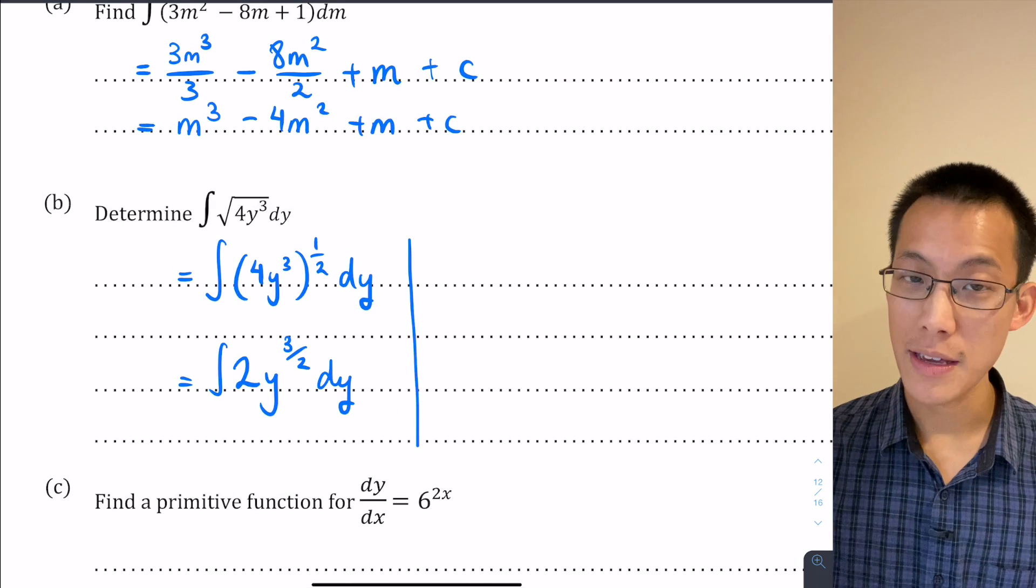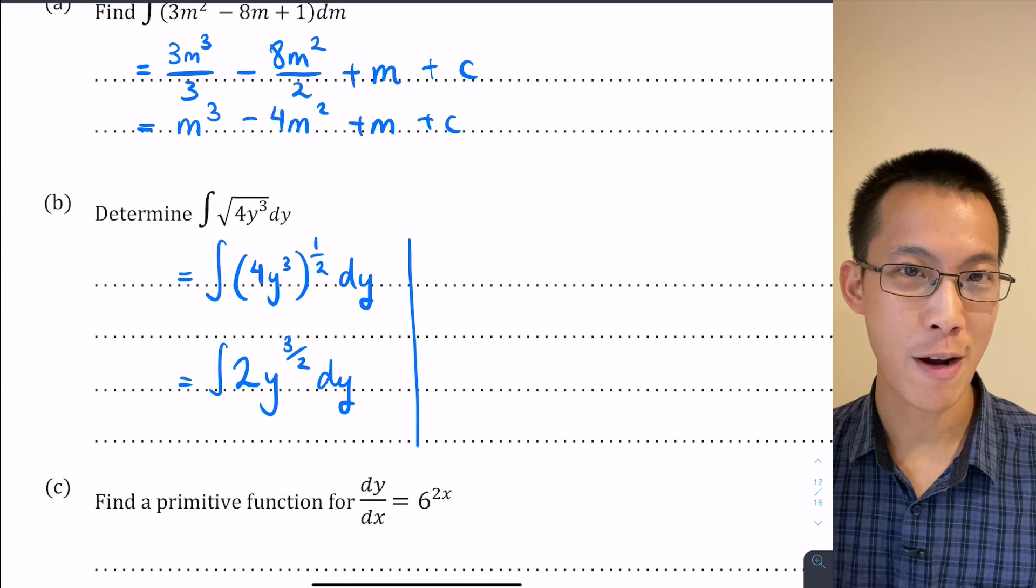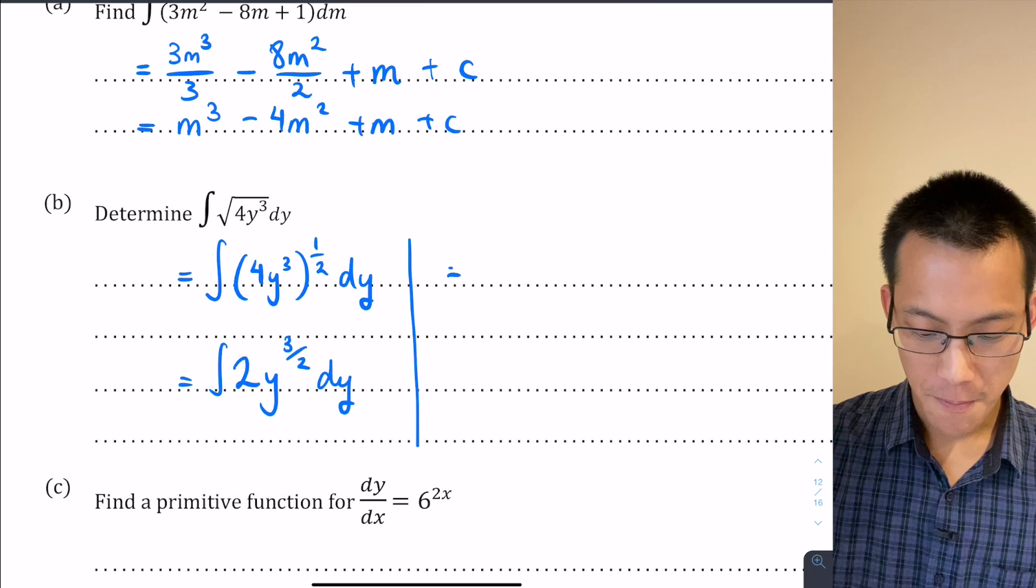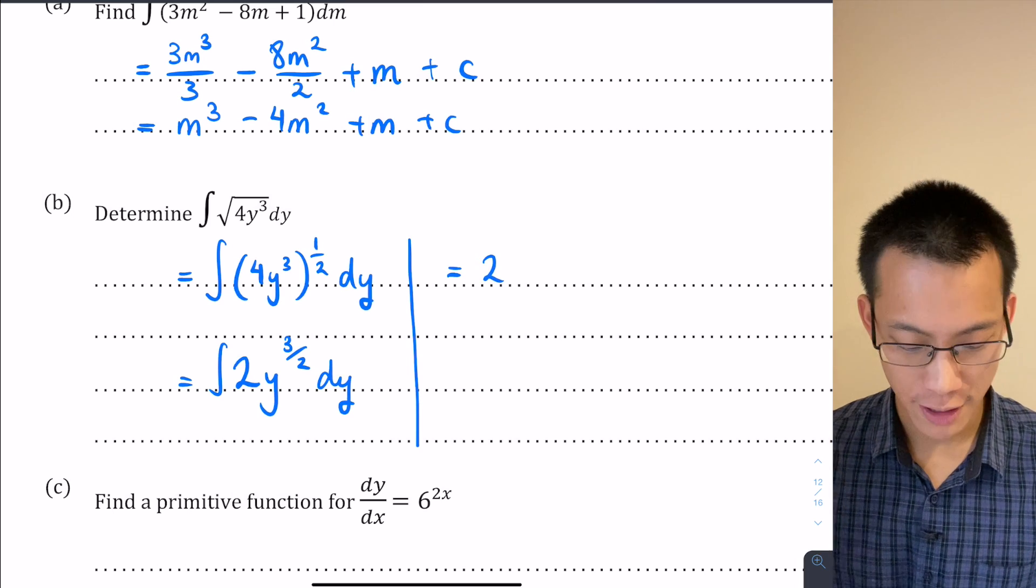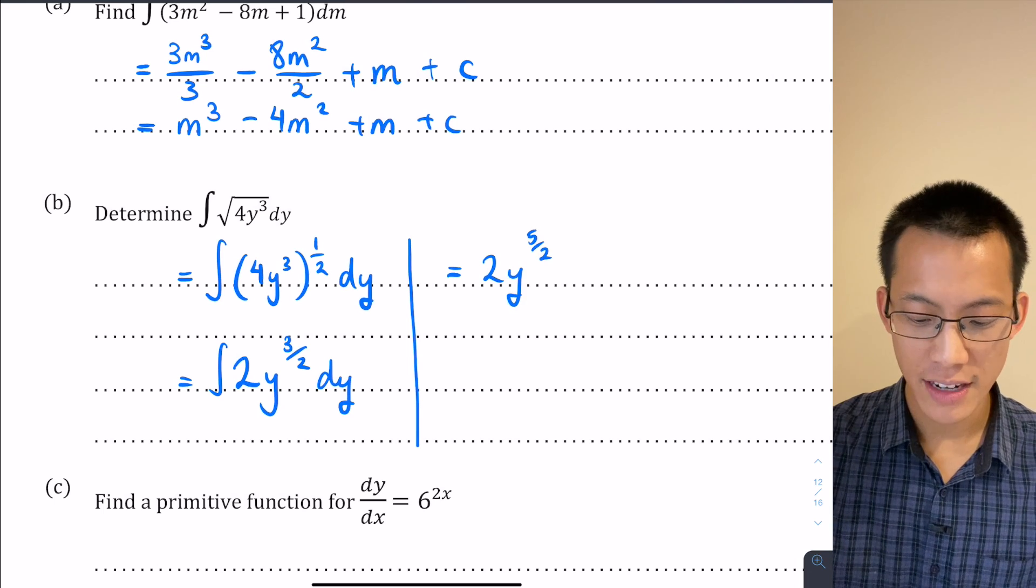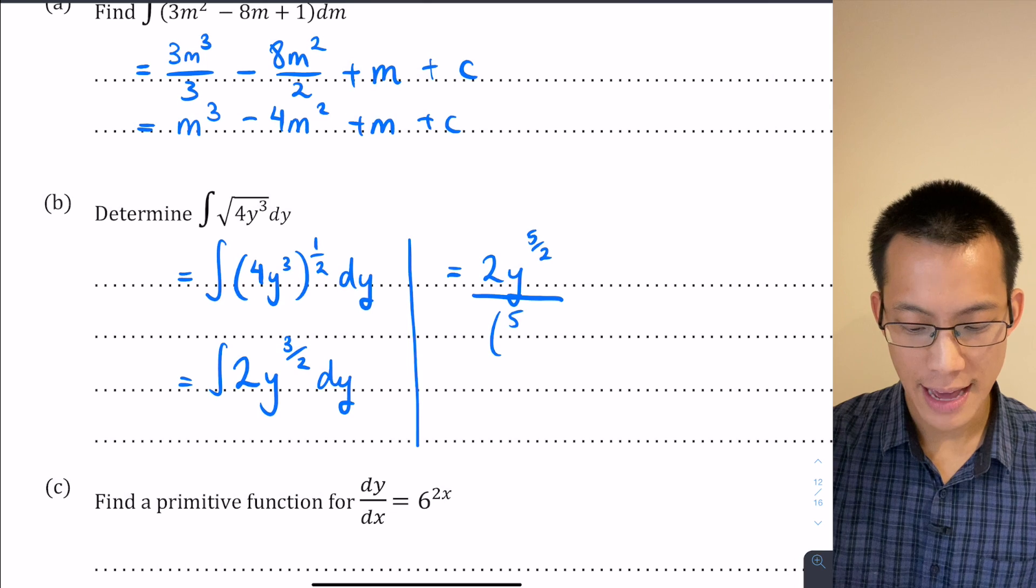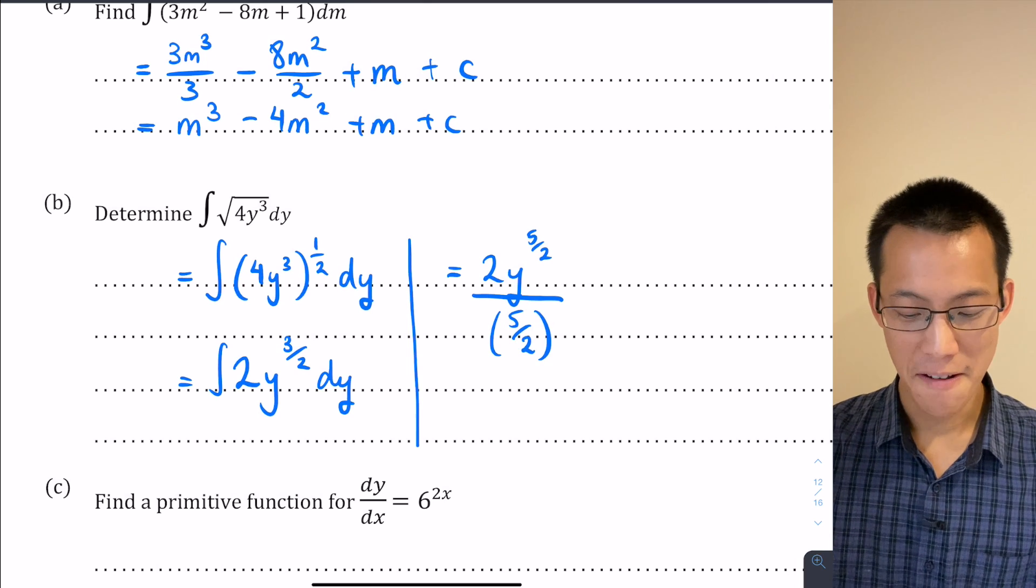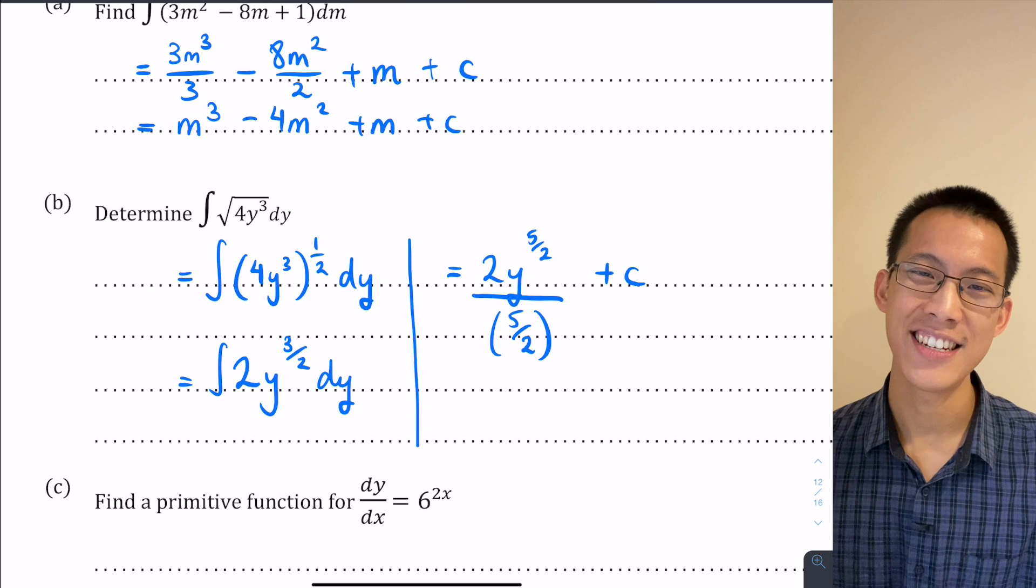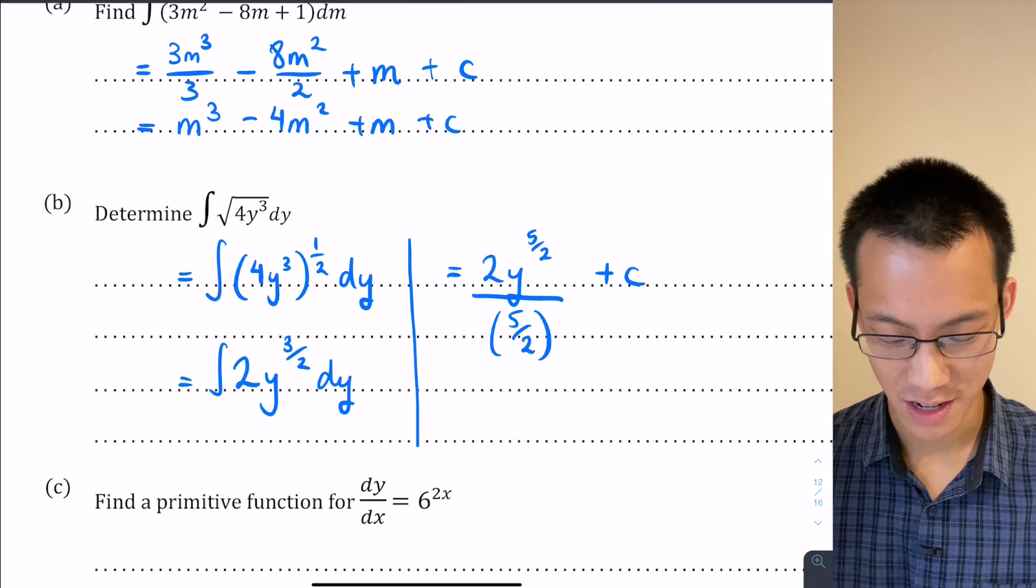So from here you just need to be cautious in your application of the regular standard rule that you use for integrating this. For starters that 2 is just going to hang out the front, and then with the y I am going to increase its index and then divide by that new index. That looks messy, we're going to simplify it in a second, but before I do, don't forget it's an indefinite integral so it has a constant of integration.